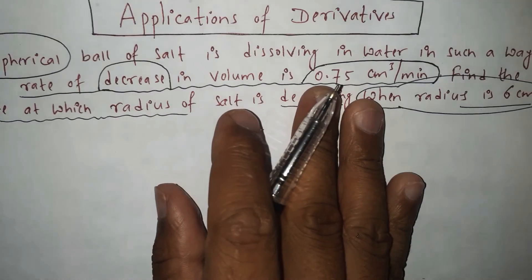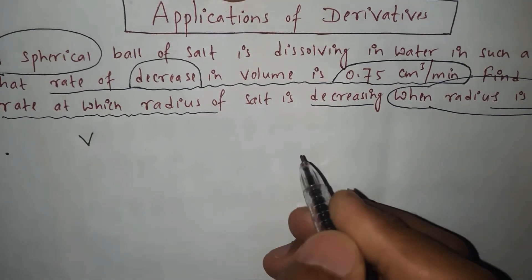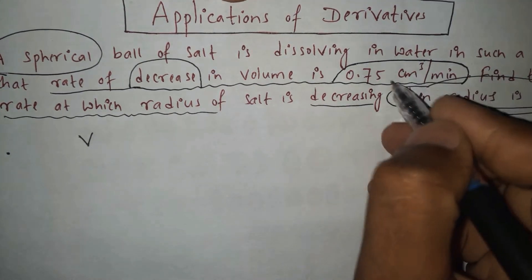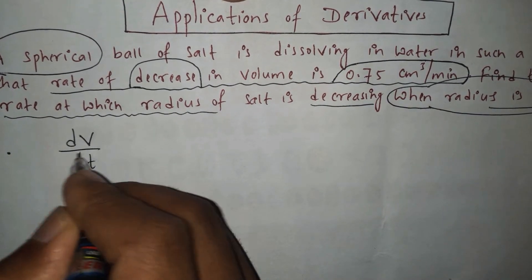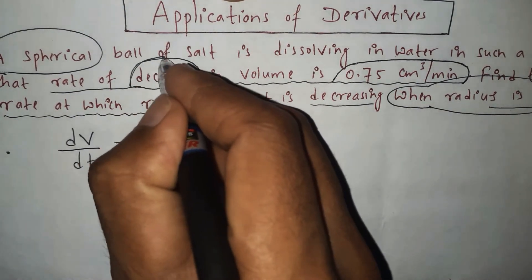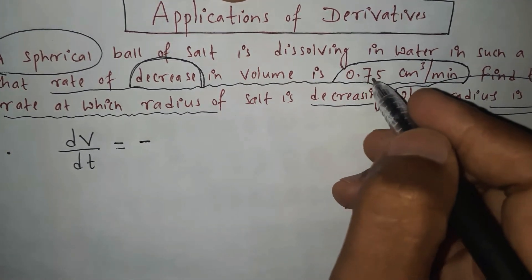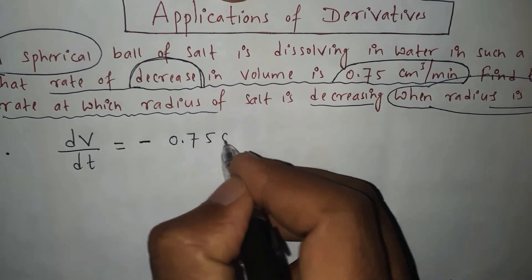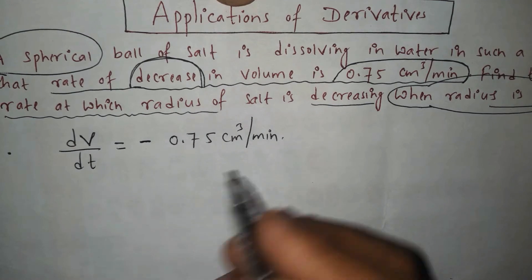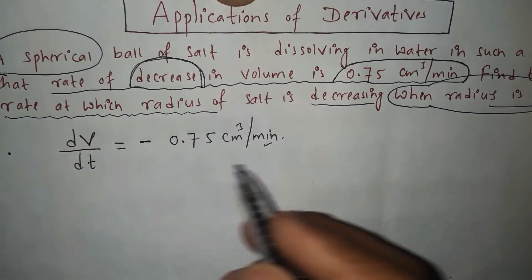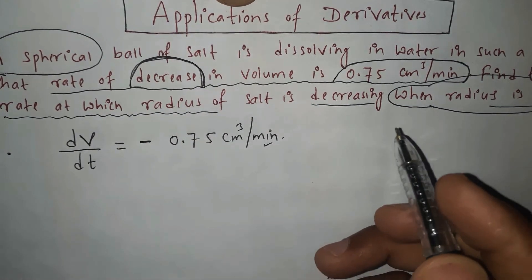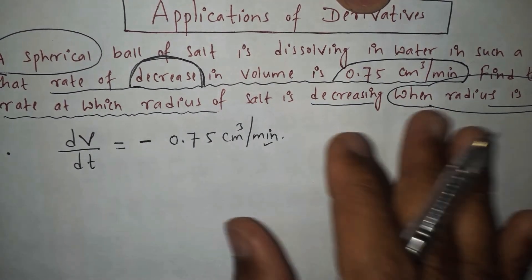Let me write the given information. Let V represent the volume of the spherical ball. The rate of change of volume with respect to time, dV/dt, is given as negative 0.75 cubic centimeters per minute. The negative sign comes because the volume is decreasing.